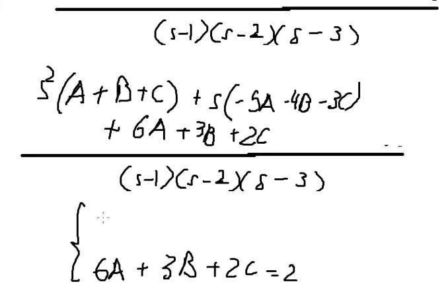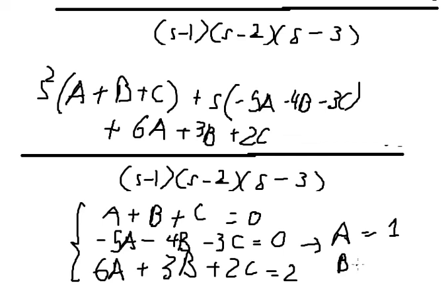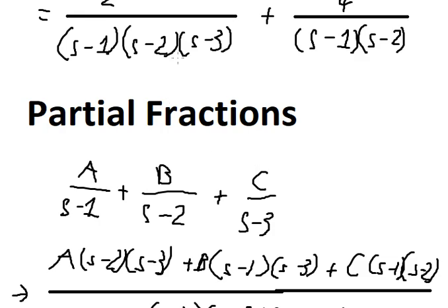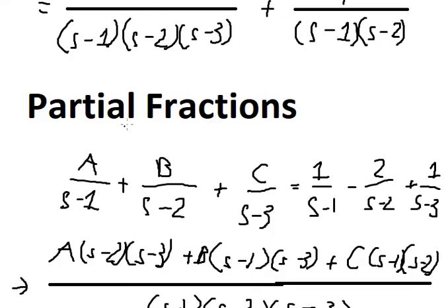The h squared and h terms equal zero because we don't have those terms on the left side. Solving the system gives A equals 1 and B equals negative 2. So the first partial fraction result is: 1 over (h minus 1) minus 2 over (h minus 2) plus 1 over (h minus 3).